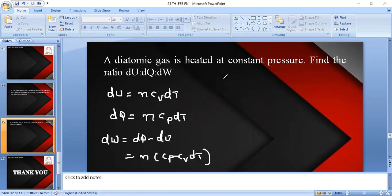But here we consider a diatomic gas. For diatomic gas, Cv is 5R by 2. It is also given in the question, Cp equals 7R by 2.